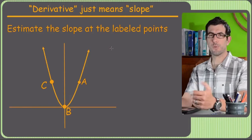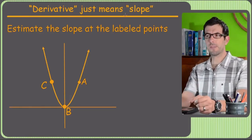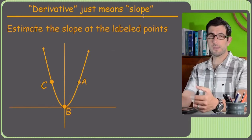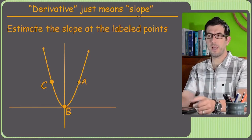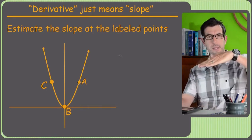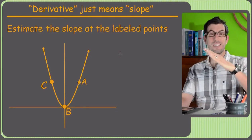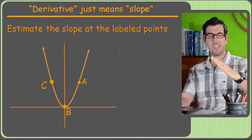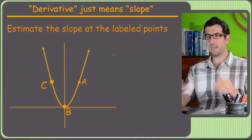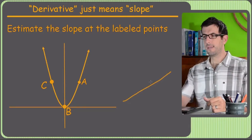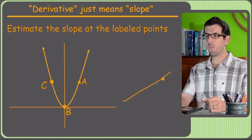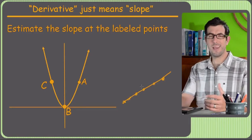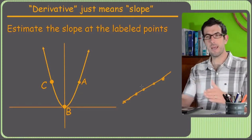What does the word derivative mean? We're just talking about slope. Other times you come across slope, it's the slope of a line — whatever angle a line is at, the slope is just how steep it is. A line has a constant slope. If I have a line like this, no matter where I draw a point, the slope is always the same. That's the whole thing about a line — the slope is constant the entire time.